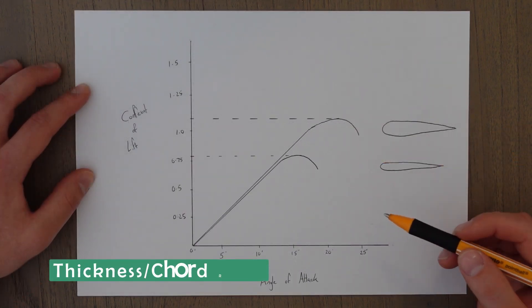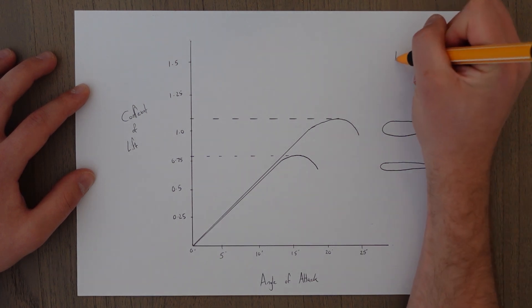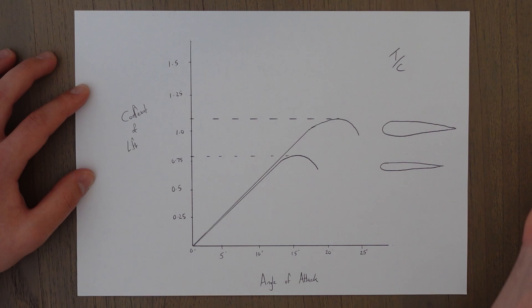Another influencer over the coefficient of lift is the thickness to chord ratio, so t over c ratio.